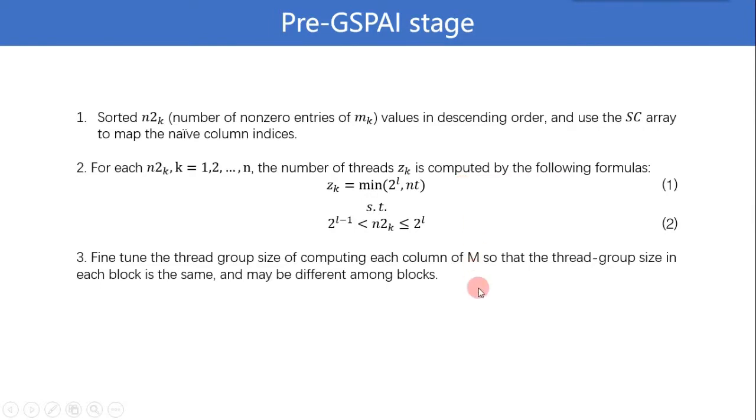Meanwhile, if the thread group size is obtained by formulas mentioned above, the size of thread groups will be likely different inside a block. But this situation will decrease the performance and be difficult to implement on GPU. Thus, we fine tune the thread group size of computing each column of M, so that the thread group size in each block is the same and may be different among blocks.